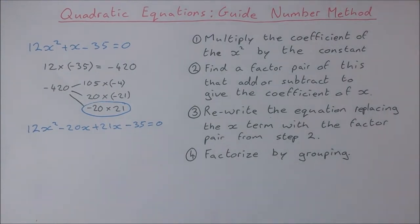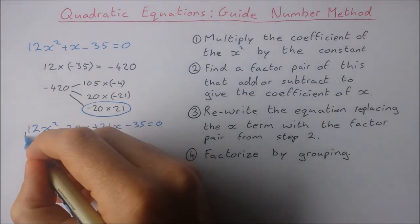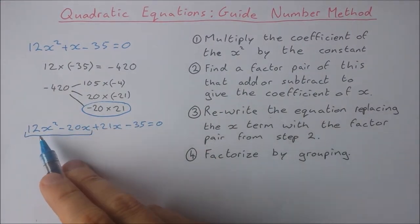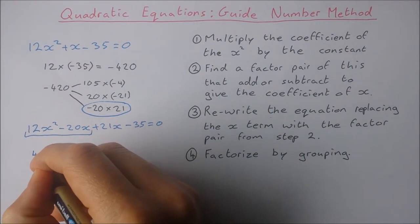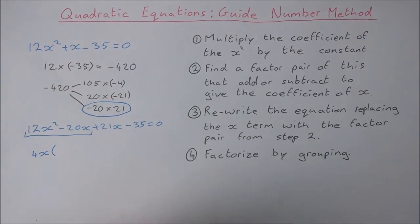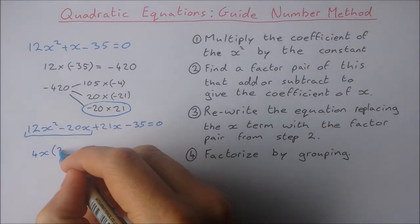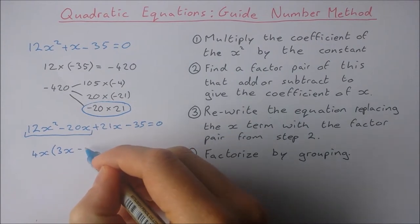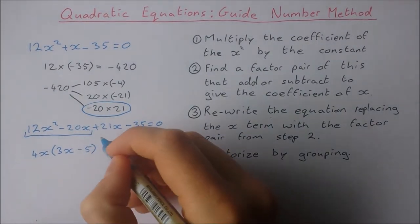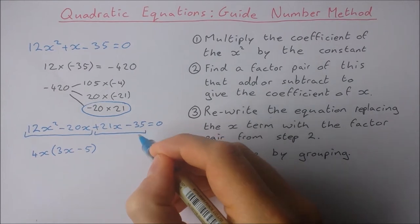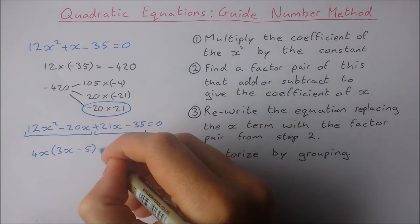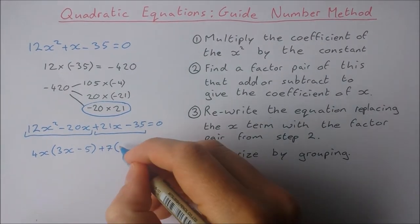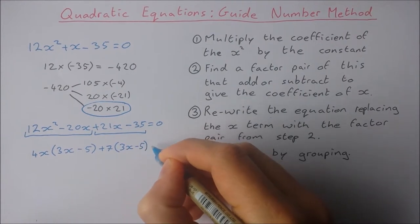Step 4: factorize by grouping and then it's going to be easy to solve. So I'm going to take the first two and factorize them. Highest common factor of 12x² - 20x is going to be 4x. That will leave me with 3x - 5 inside the brackets. I want to factorize 21x - 35. Highest common factor here is going to be 7, and that will leave you with 3x - 5 again.